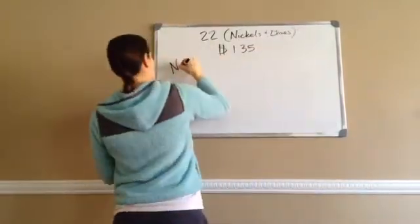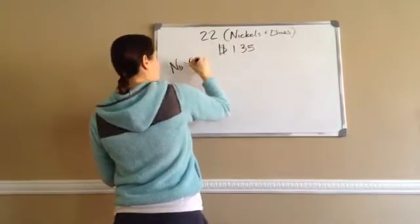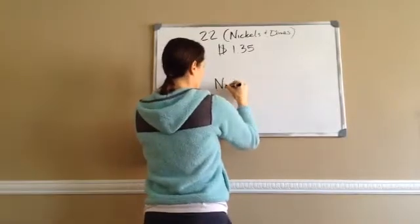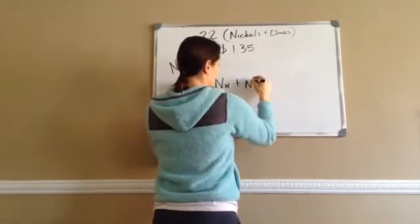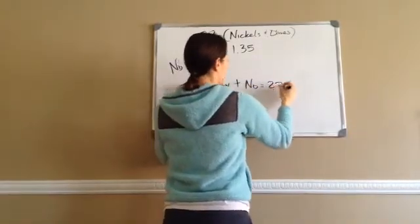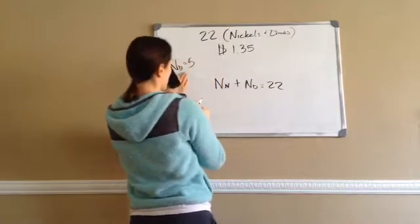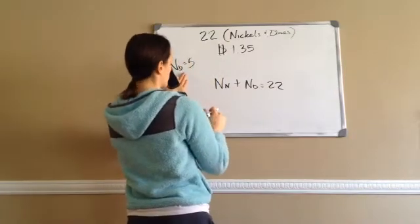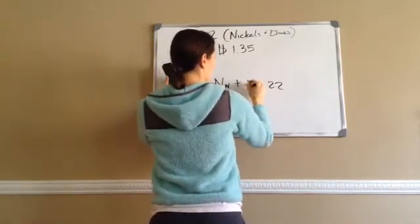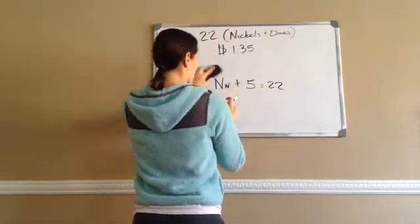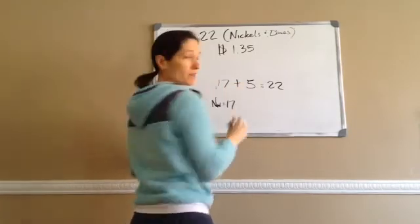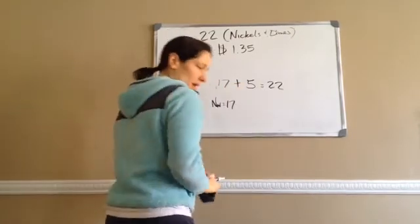Now just put the information back in. If ND equals 5, then NN plus ND equals 22 — our original equation — so with ND as 5, that means NN is 17.